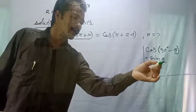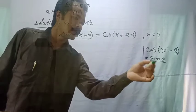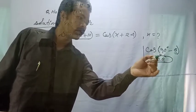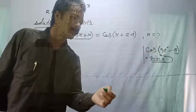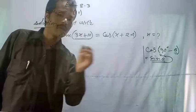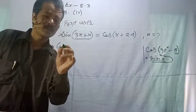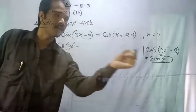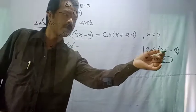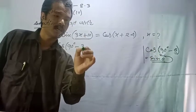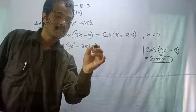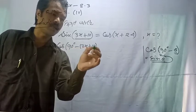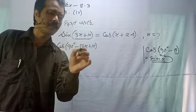Minus theta. So 3x plus 10 is cos 90 degrees minus theta.